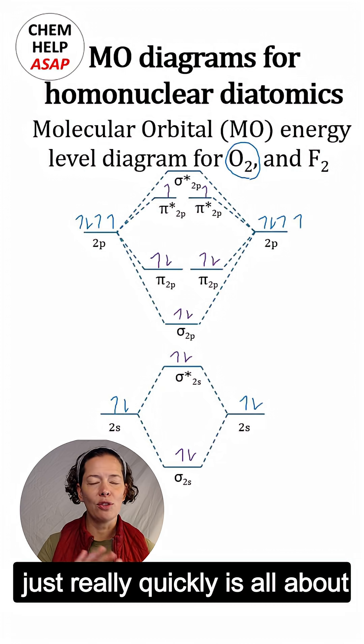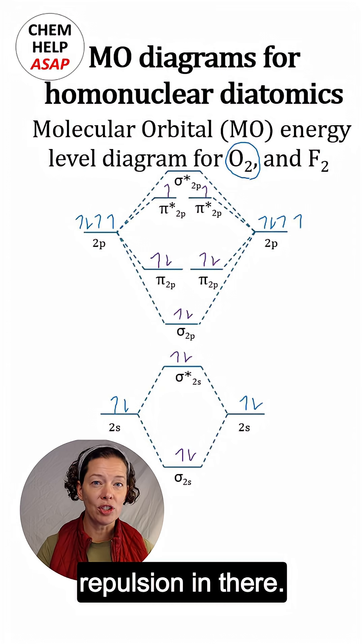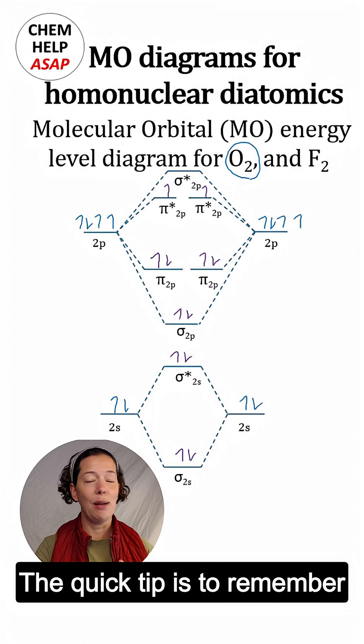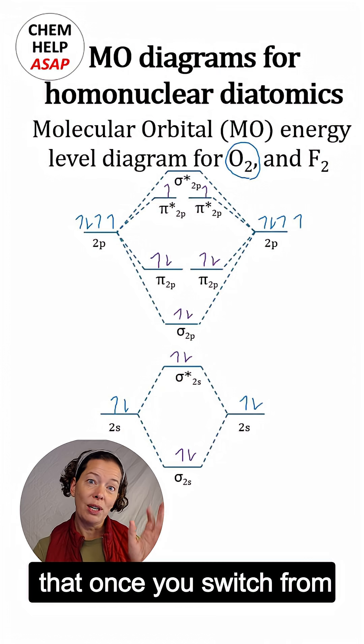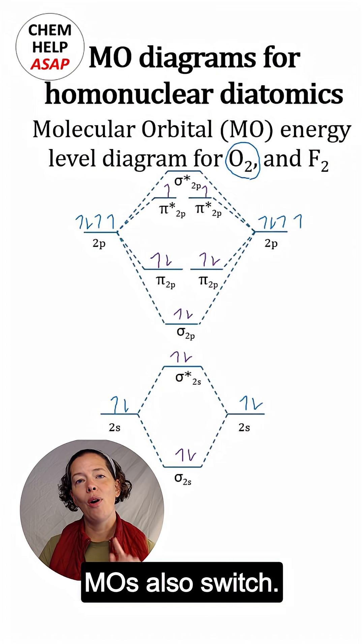Now this change in energy is all about the sp orbital mixing and also some electron repulsion. That is not the point of this quick tip. The quick tip is to remember that once you switch from N2 to O2, the energies of your MO also switch.